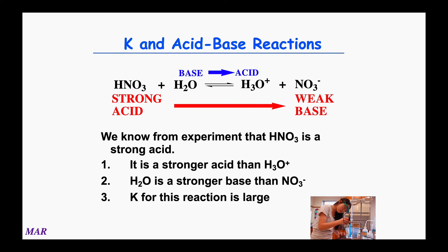Nitric acid is a strong acid — stronger than hydronium. Nitric acid pushes to the right; hydronium doesn't push back to the left. So HNO₃ is stronger than H₃O⁺. Water is a stronger base than nitrate — water is also pushing to the product side; nitrate is not able to push back. For this reaction K is very large. For strong acids and strong bases, don't even think of them as equilibria — they are so product-favored that the conjugates can't push back.